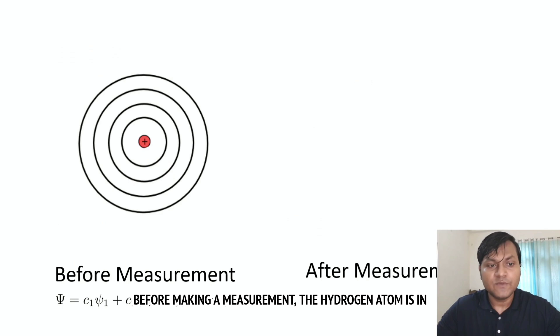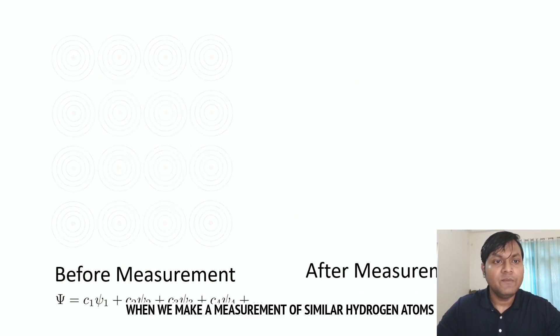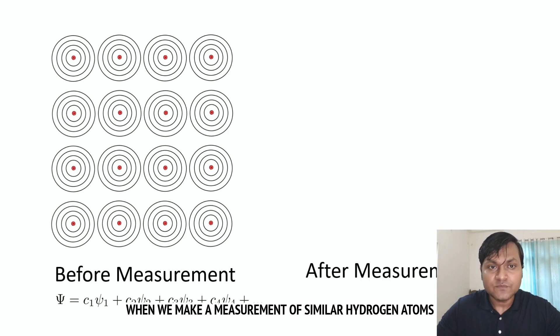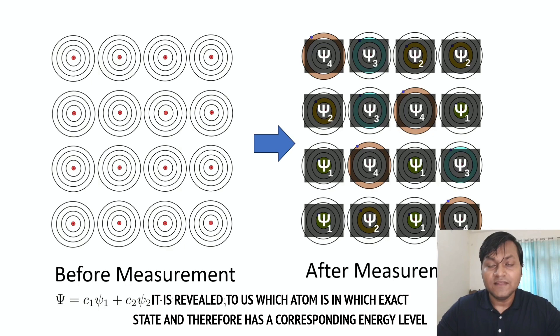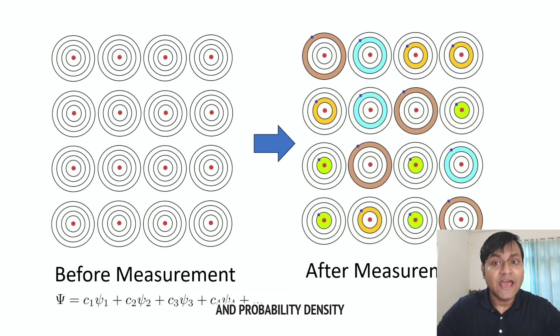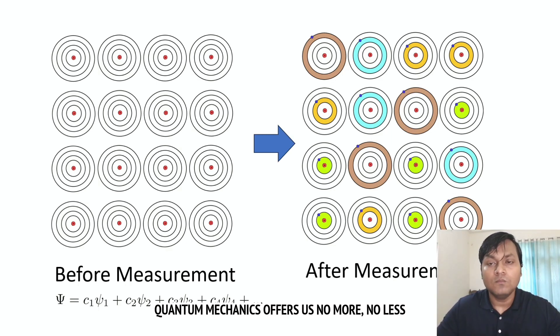Before making a measurement, the hydrogen atom is in a superposition of all possible states. Only when we make a measurement of similar hydrogen atoms, it is revealed to us which atom is in which exact state and therefore has a corresponding energy level and probability density. So we can only make a probabilistic prediction. Quantum mechanics offers us no more, no less.